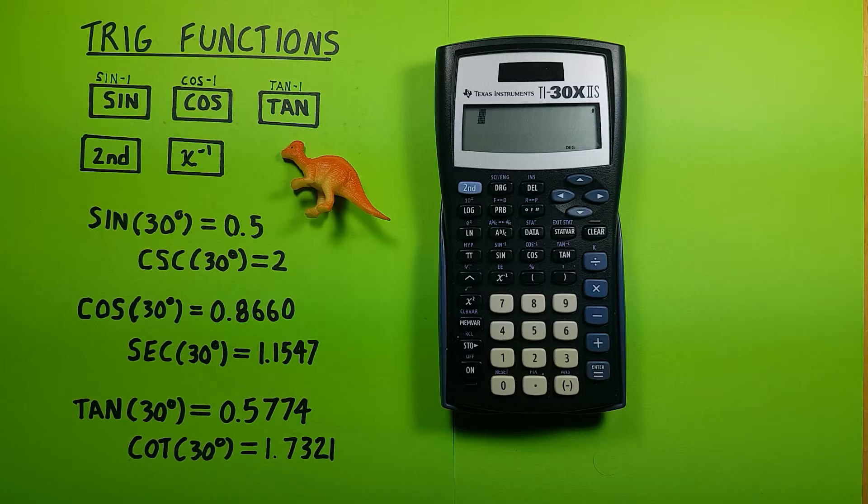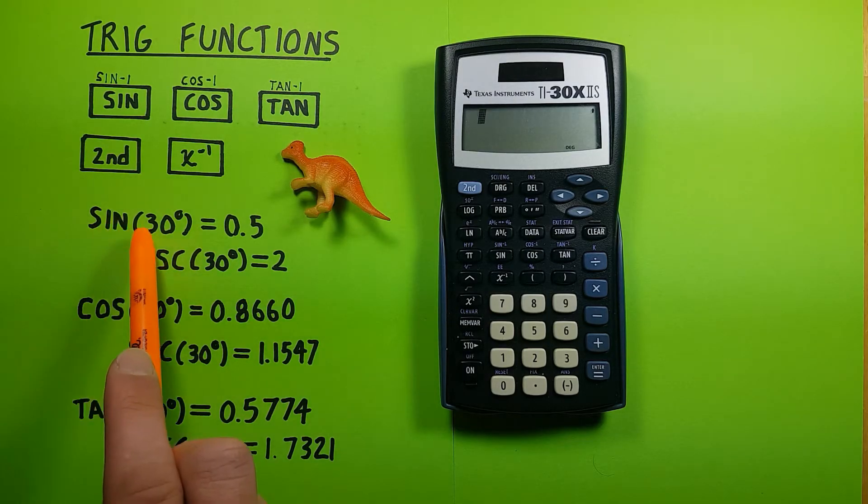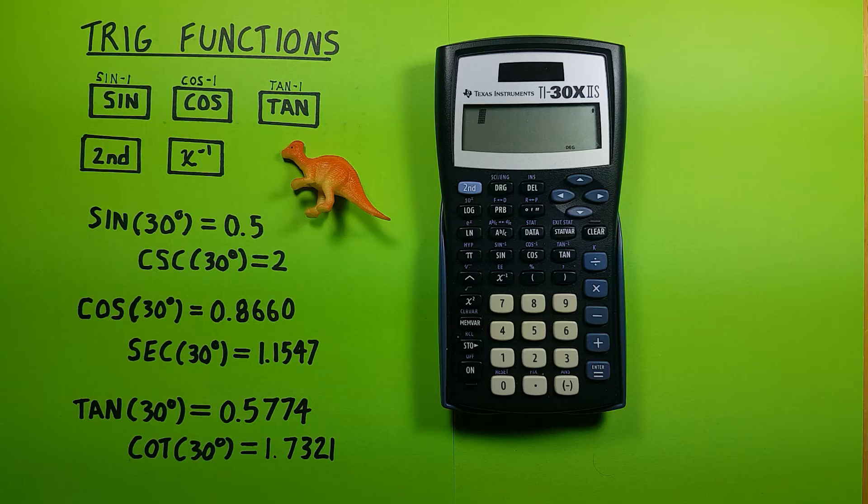For the basics, if we wanted to find the sine of 30 degrees, we would type it as you would write it.